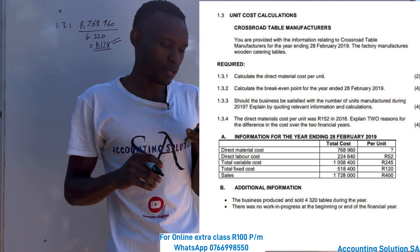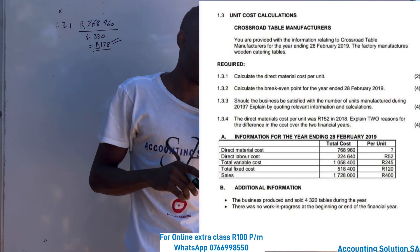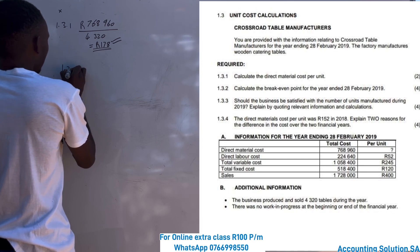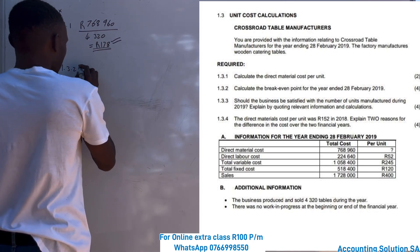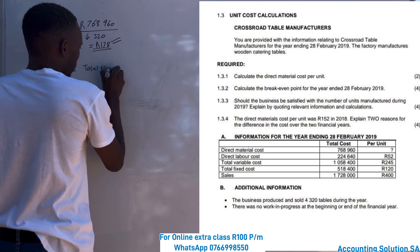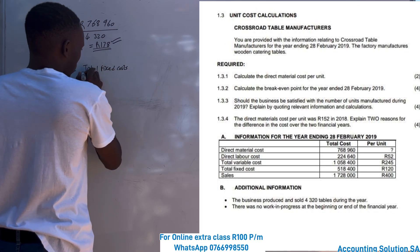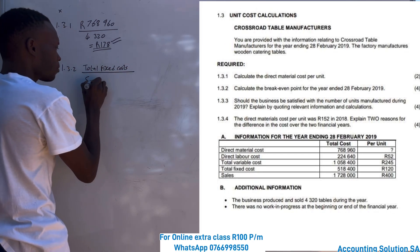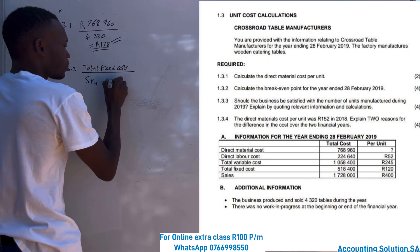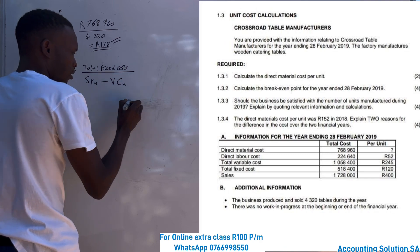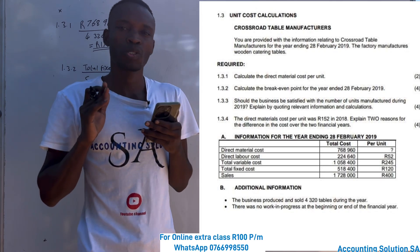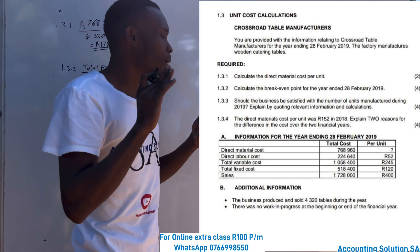Now let's calculate the break-even point for the year ending 28 February 2019. You must know the formula. The formula for break-even point is: total fixed cost divided by selling price per unit minus variable cost per unit. Know the difference between per unit and total — total is the larger amount, per unit is the small number for one item.